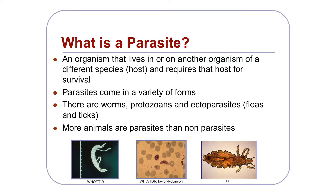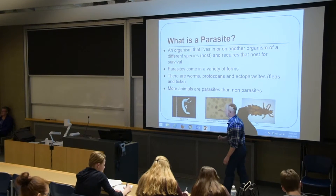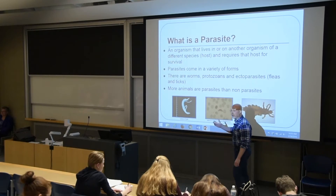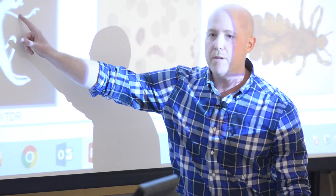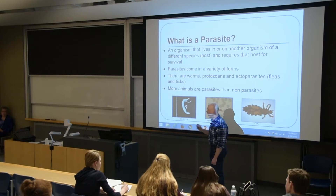Parasites can come in a wide variety of different forms. There are worm parasites — what you're looking at here is a parasitic worm, a parasitic helminth. This is Schistosoma mansoni. You're actually looking at two parasites: the larger one is the male parasite and the slender one is the female. The female actually sits in what's called the gynecophoreal canal of the male, they mate, and the female lays eggs. This parasite infects humans and can live in the hepatic portal vein for about seven years — it's a very serious parasite.